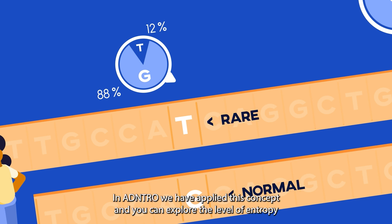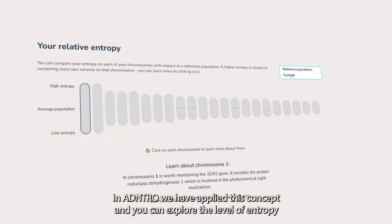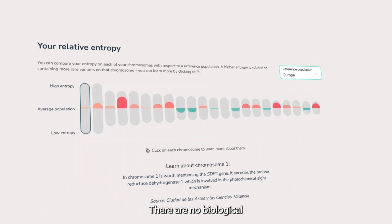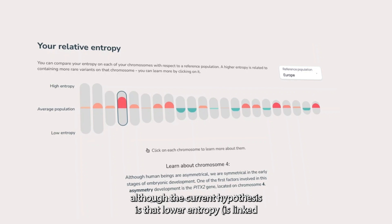In Adentro, we have applied this concept so you can explore the level of entropy by chromosome. There are no biological implications, although the current hypothesis is that lower entropy is linked to higher redundancy, and therefore more protective to disease.